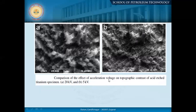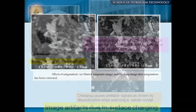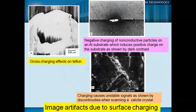Depending on your acceleration voltage, you can see how the image changes. If you have a conductive or non-conductive sample, you may have some sort of charging effect. For example, gross charging effects on Teflon samples — where you have a non-conductive sample — cause an unstable signal and visible variations in your image.